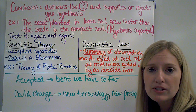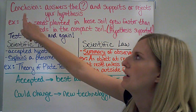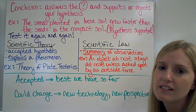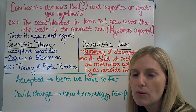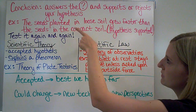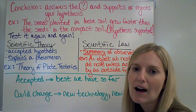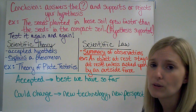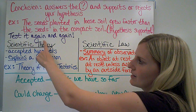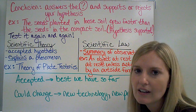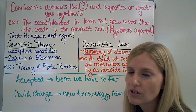Once I do the experiment and get my results and create tables, charts, and graphs to demonstrate what my results have been, I come up with my conclusion. This is the answer to my question, and it's either going to support my hypothesis or reject it. Let's say I find out that the seeds in the loose soil grow faster than in the compact soil — this means my hypothesis is supported because I was right. If it was wrong, I would reject the hypothesis. No matter what happens, whether you are right or wrong, you end up testing that hypothesis again and again — over and over — to see if those results are always the same.